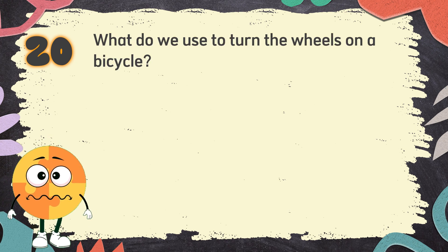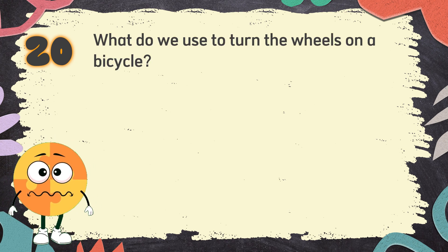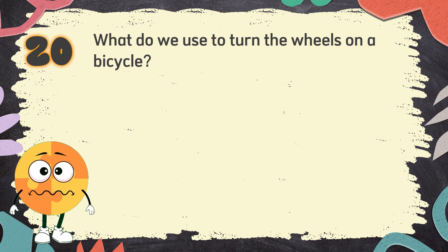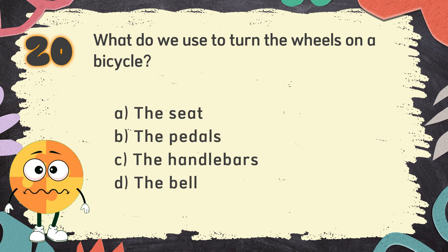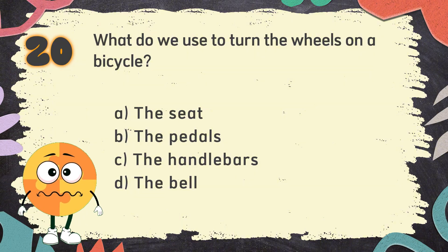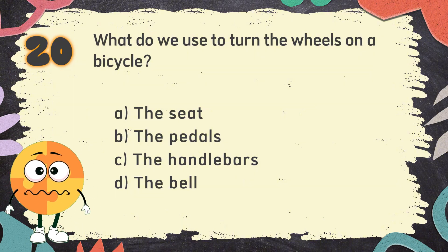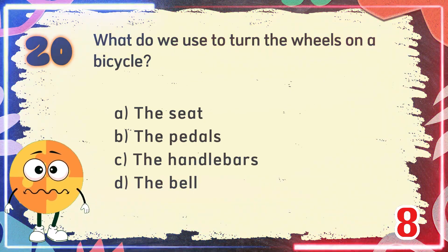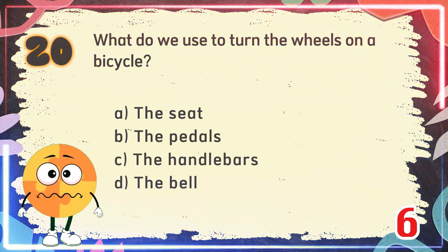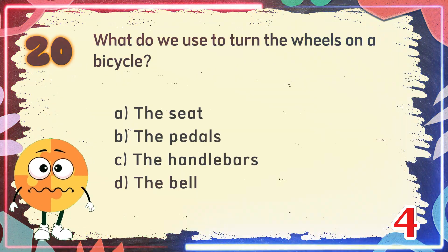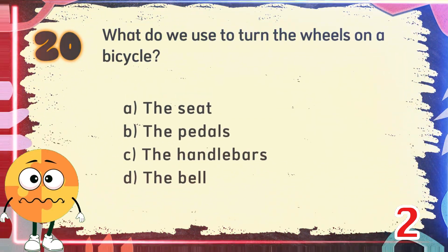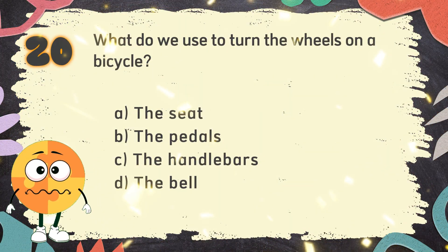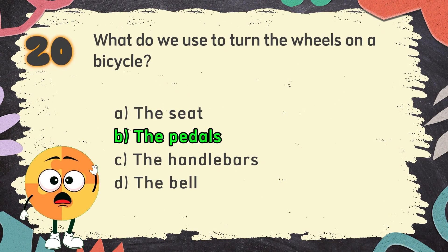Number 20. What do we use to turn the wheels on a bicycle? The choices are: A. The seat. B. The pedals. C. The handlebars. D. The bell. The correct answer is B. The pedals.